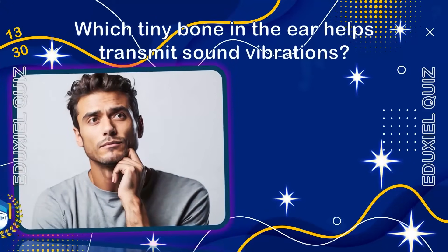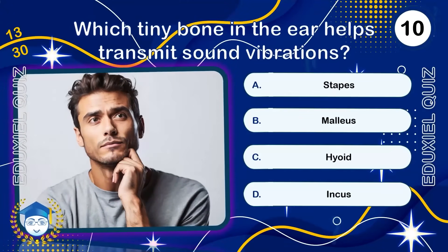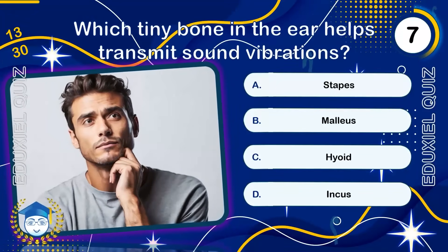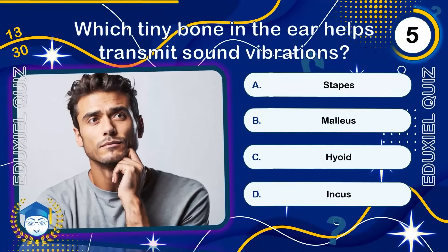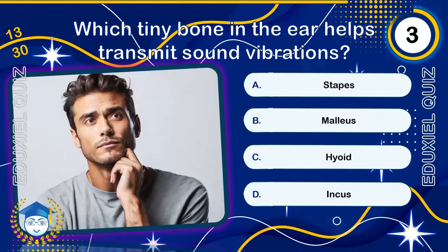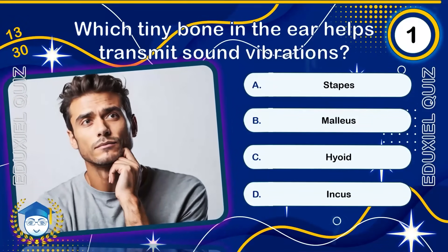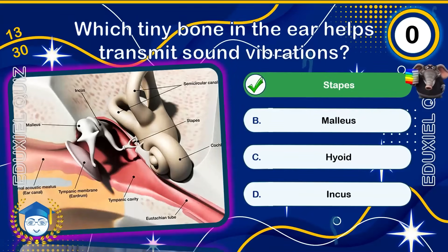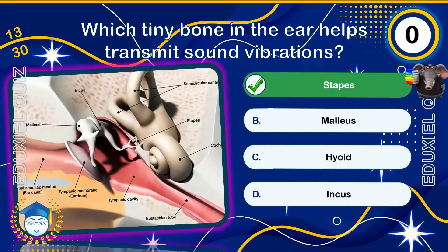Which tiny bone in the ear helps transmit sound vibrations? The stapes transmits sound vibrations from the eardrum to the inner ear. Damage to the stapes can cause hearing loss.